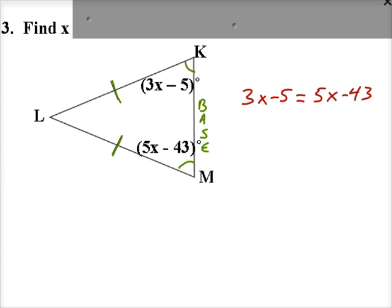So then let's solve for x. I'll subtract 3x from both sides, add 43 to both sides, and lastly divide by 2 on both sides.